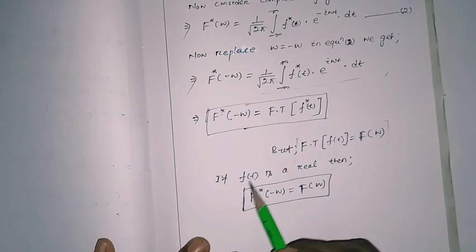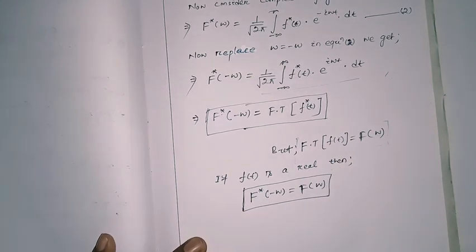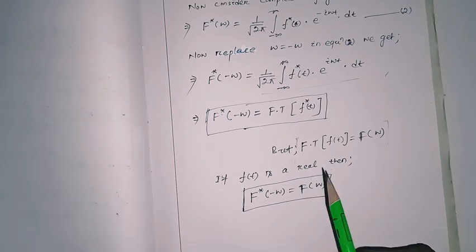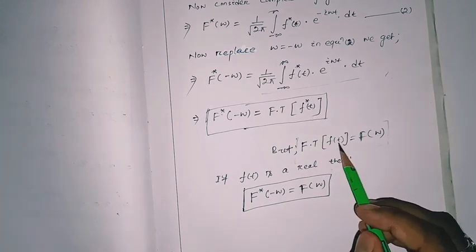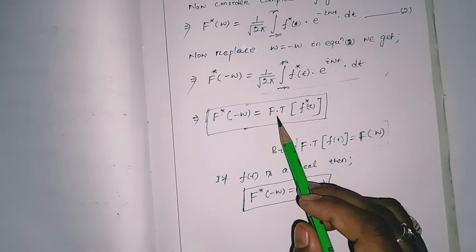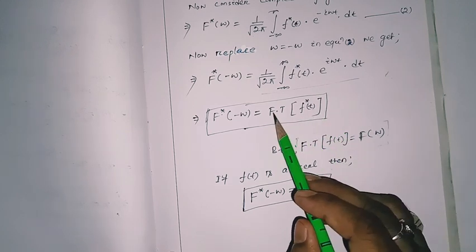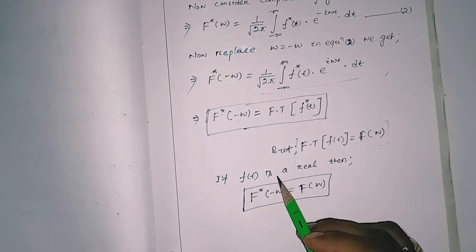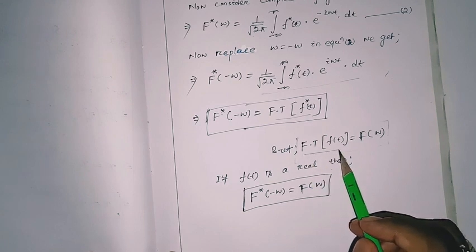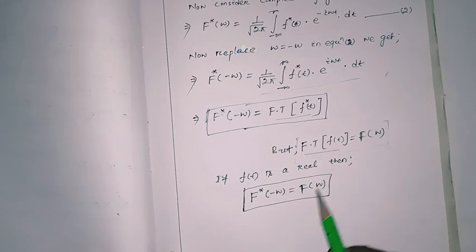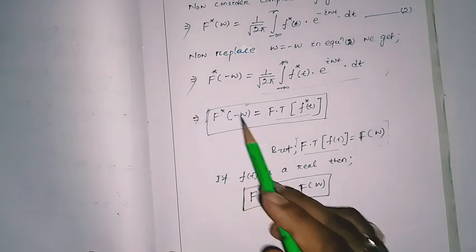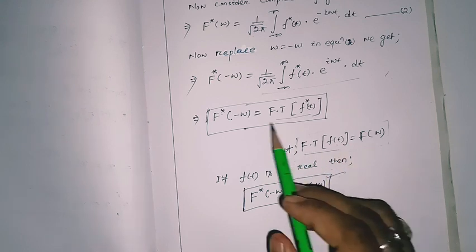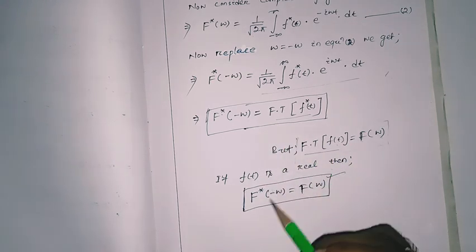Now, if small f(t) is real, then f*(t) and f(t) are both the same. That means the Fourier transform of f*(t) is nothing but the Fourier transform of f(t). So hence we can find that capital F(ω) equals capital F*(−ω). This relation holds when f(t) is real. If f(t) is complex, then the two general expressions must be remembered.